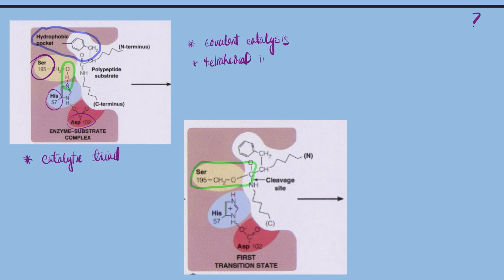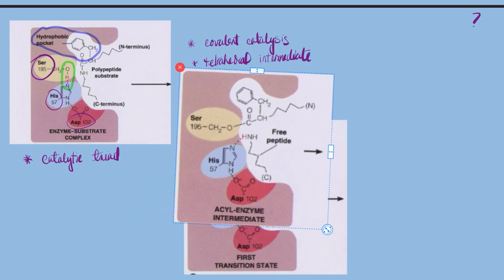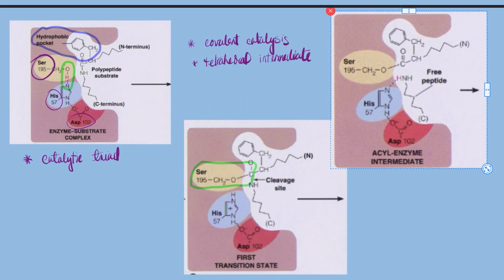During step number three, now histidine-57, as it is protonated, can act as a general acid and protonates the amino leaving group. As this happens, the peptide bond is broken and the first product leaves. The acyl enzyme intermediate is formed, and this completes the first part of the reaction.